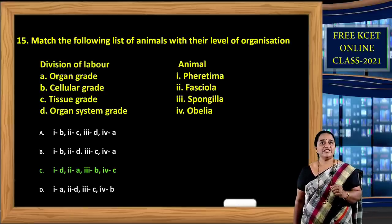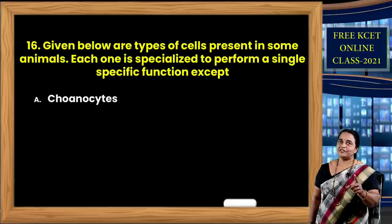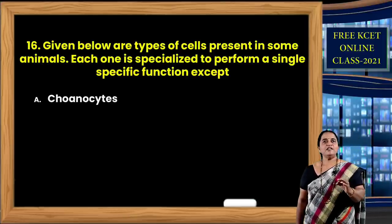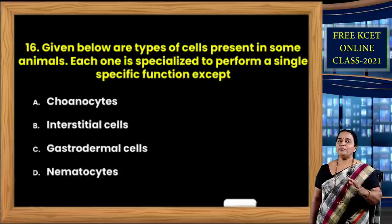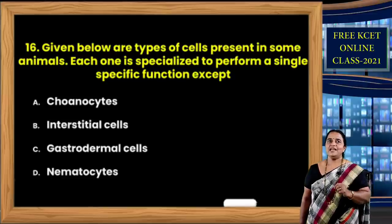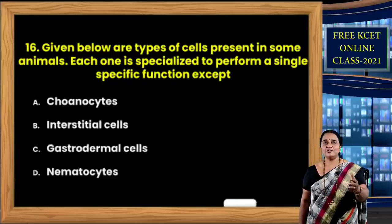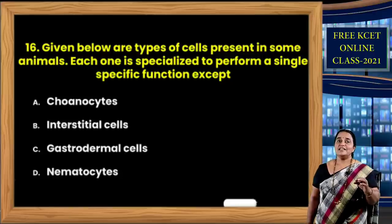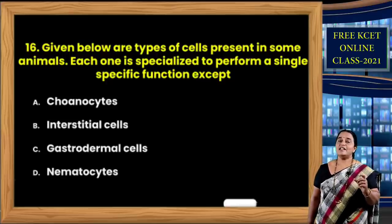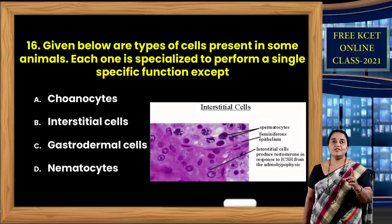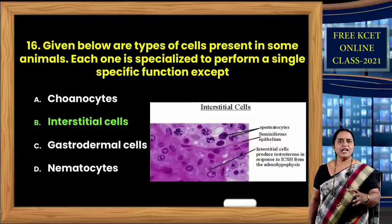Question 16: Given below are types of cells, each specialized to perform a single specific function — except one. Choanocytes (collar cells) are known for intracellular digestion in poriferans. Nematocytes are found in nematoblasts of coelenterates, helping in defense or capturing prey. Gastrodermal cells line the body wall helping in digestion. Option B — interstitial cells — are undifferentiated cells and do not have any specific function. So option B is correct.